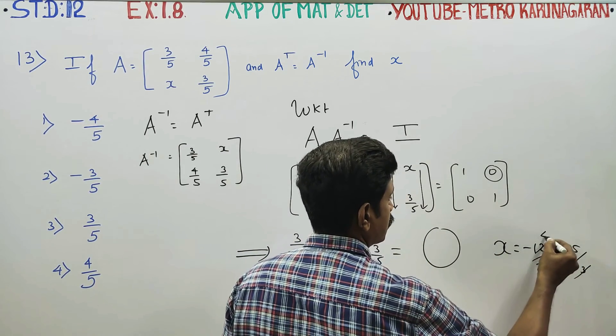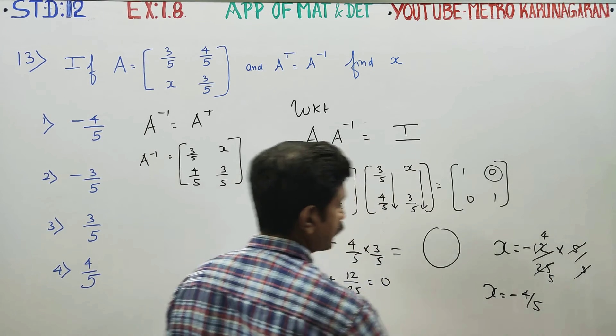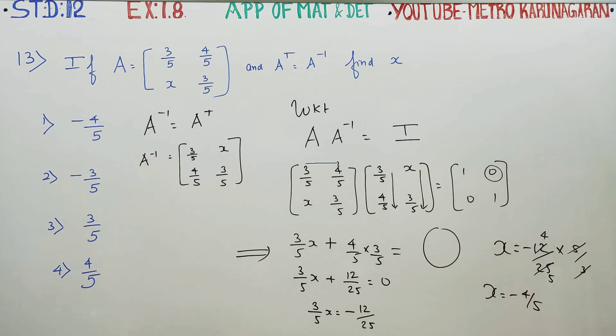3 and 4 cancel, 5 times cancel. X is equal to minus 4 by 5 will be your answer. Minus 4 by 5 is the first option. Therefore your exact answer is minus 4 by 5. Thank you.